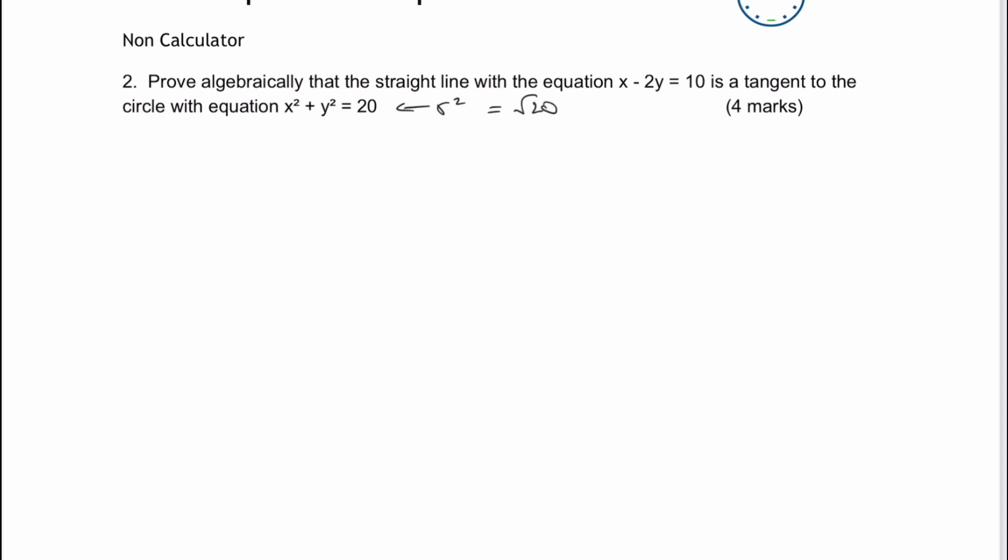So what I would normally do with these is draw a little sketch first, just to sort of clearly demonstrate that if it is a tangent to the circle, it has to have only one solution. Now, I'm not going to solve it graphically. I have to solve it algebraically. But nevertheless, I think having a little sketch just showing what it is you're trying to achieve, I think might be useful.